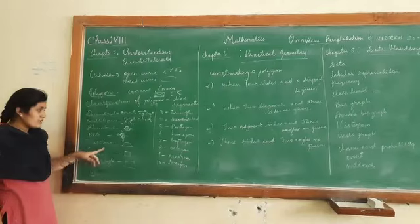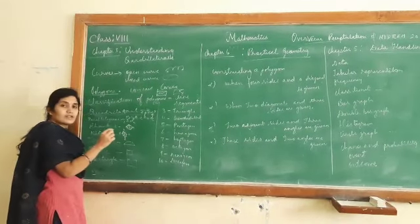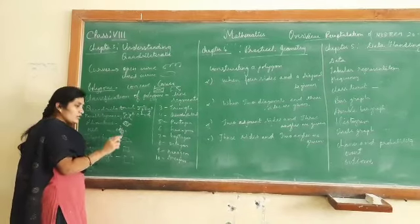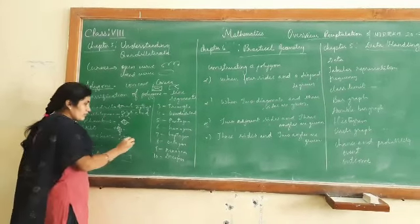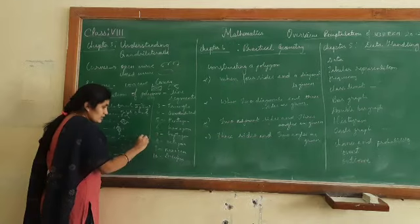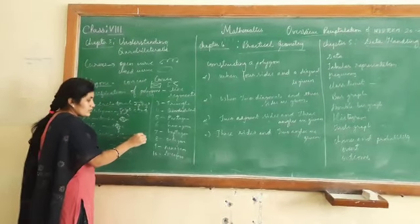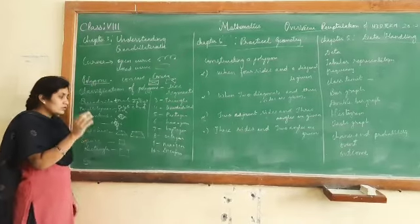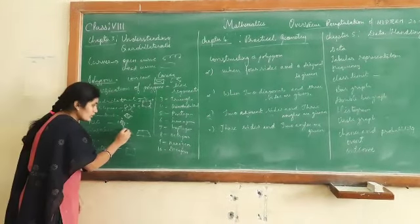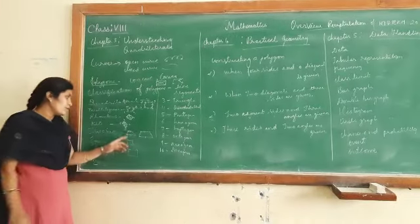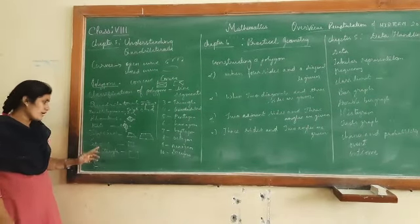Trapezium: one pair of opposite sides is parallel but not the other pair - only one pair is parallel. In an isosceles trapezium, a pair of sides are parallel and the other non-parallel pair are equal. Not all trapeziums are isosceles, but always in a trapezium one pair of opposite sides will be parallel.